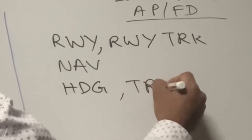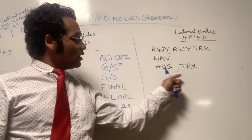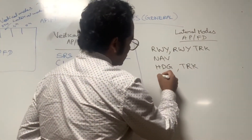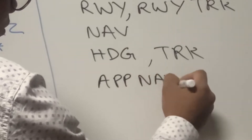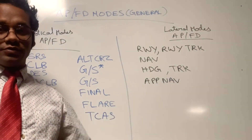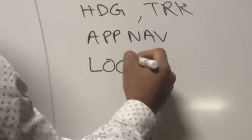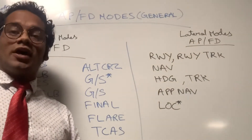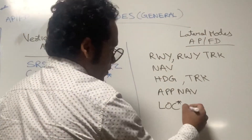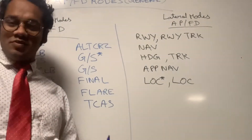If you get the HDG FMA in the third column it means you are in heading mode. TRK means track mode. Both HDG and TRK are also called basic modes. Next is APP NAV, which is the approach nav mode. Then LOC*, which means the localizer is in capturing mode, also called localizer capture mode.